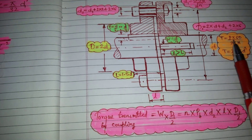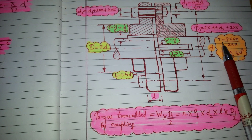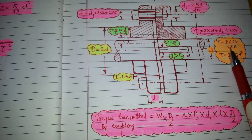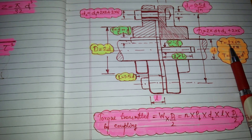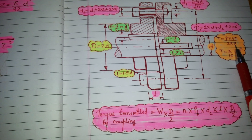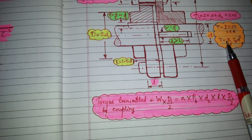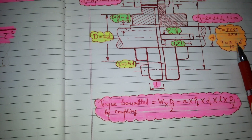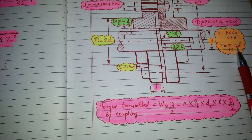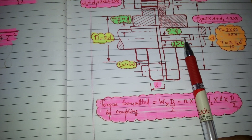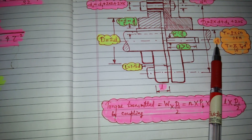The diameter of the shaft can be found using two formulas: T is equal to P into 60 divided by 2 pi N, where T is the torque, P is the power transmitted by the shaft, and N is the RPM. Using this torque, we apply the formula: torque equals pi by 16 into allowable shear stress into D cube, where S denotes steel, to find the diameter of the shaft.